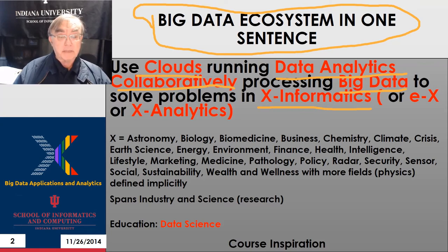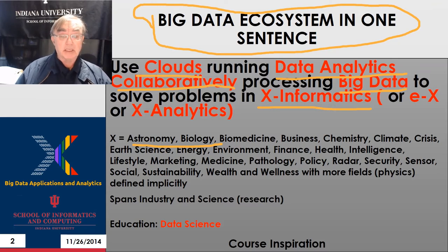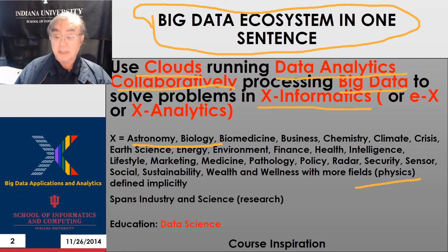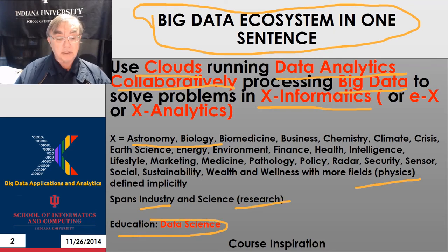If you look on the web, you can see where people have defined the field of X-informatics. This lists some of these fields: astronomy, biology, biomedicine, business, chemistry, climate, crisis, earth science, energy, environment, finance, health, intelligence, lifestyle, marketing, medicine, pathology, policy, radar, security, sensor, social, sustainability, wealth, and wellness. Physics informatics is clearly practiced but not always given that name. This covers both industry and research — science and engineering — and is all associated with the educational activity called data science.